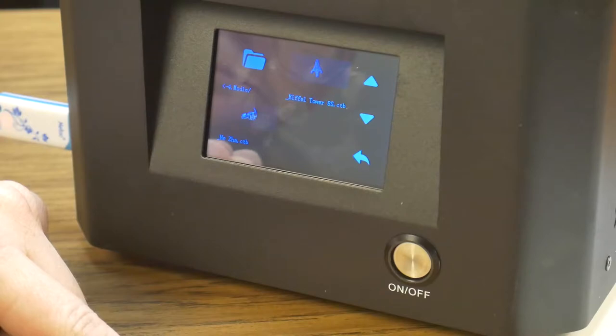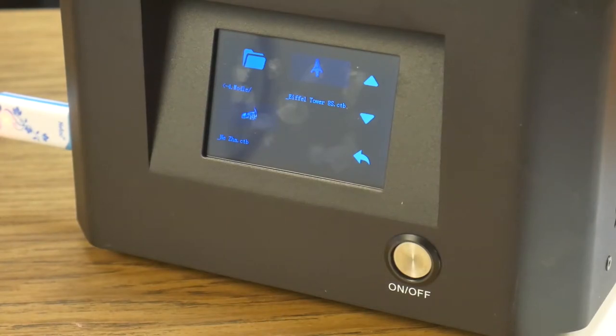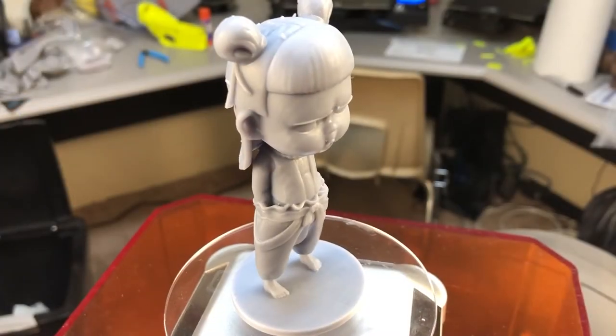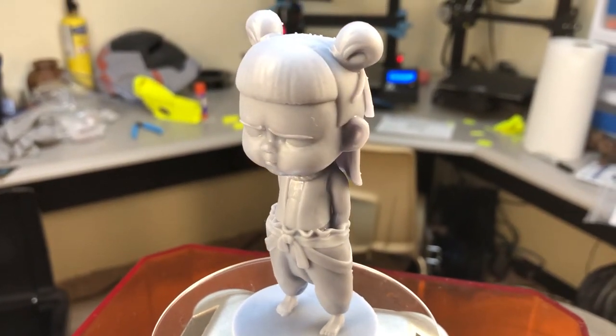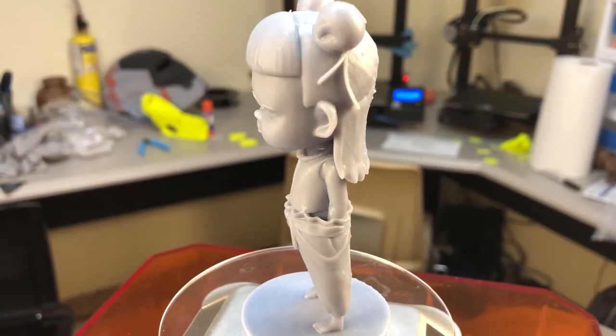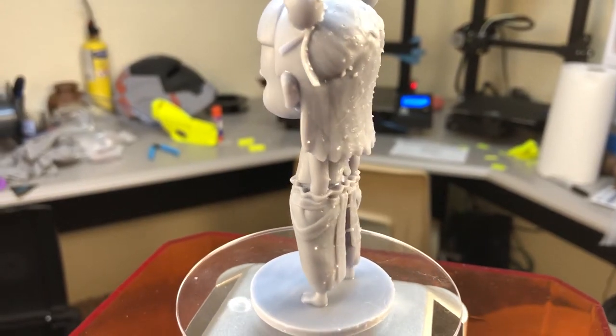Once I leveled the printer I searched the provided USB stick for pre-sliced models. I chose the first one on the list and I let it print. I guess I should have paid more attention to the file because it printed this 4 inch bobblehead looking child. It was also a solid print so it took a lot of resin.